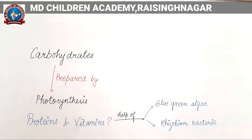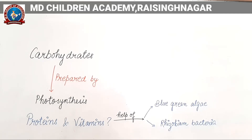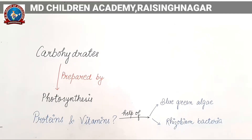We are continuing our chapter number 1. Till now, we discussed that carbohydrates are prepared by the process of photosynthesis. But what about proteins and vitamins?